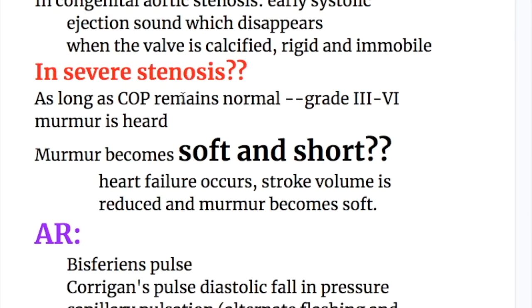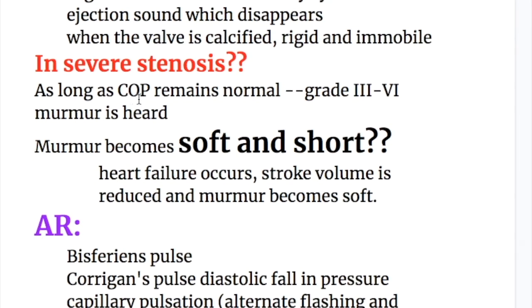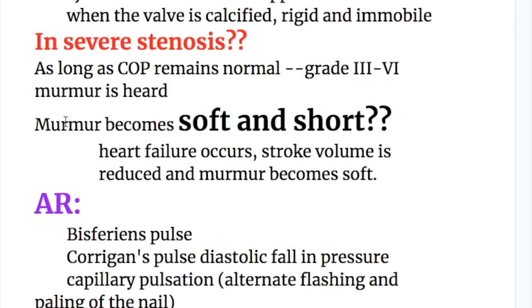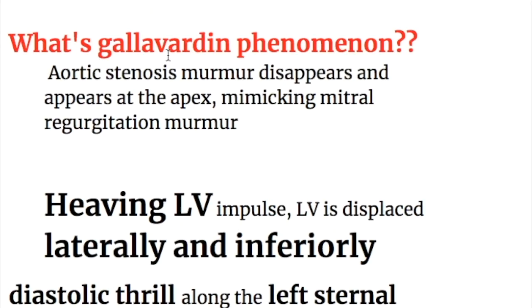In severe stenosis, as long as cardiac output remains normal, there is a grade three to six murmur. The murmur becomes soft and short when heart failure occurs, as stroke volume is reduced. The Gallavardin phenomenon refers to when the aortic stenosis murmur disappears from the right second intercostal space and appears at the apex in the left fifth intercostal space, mimicking a mitral regurgitation murmur.